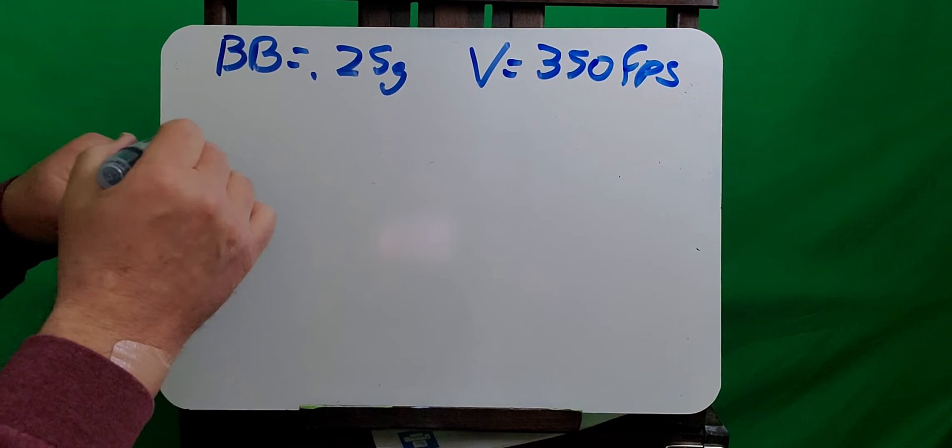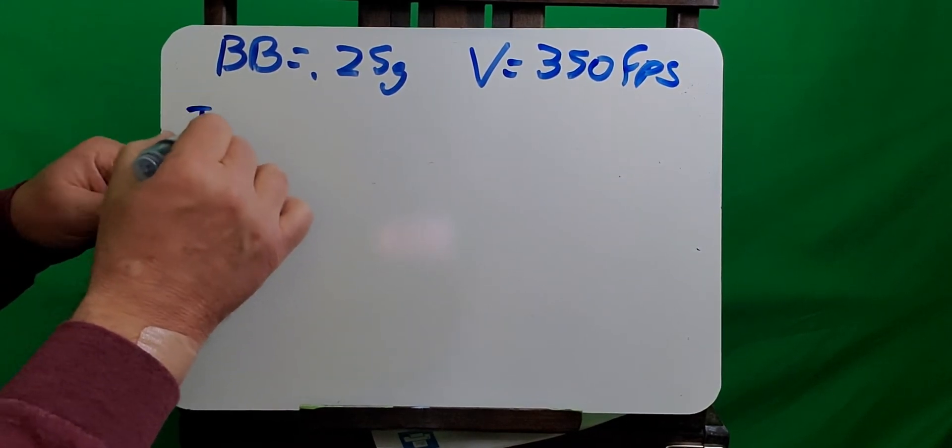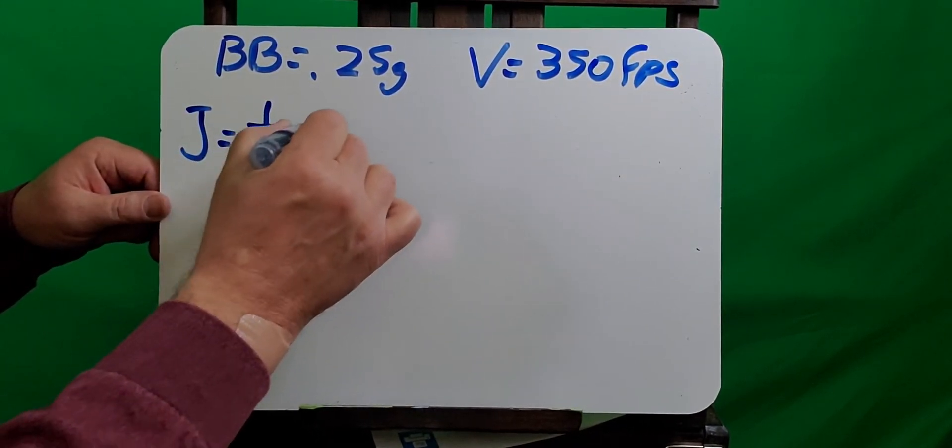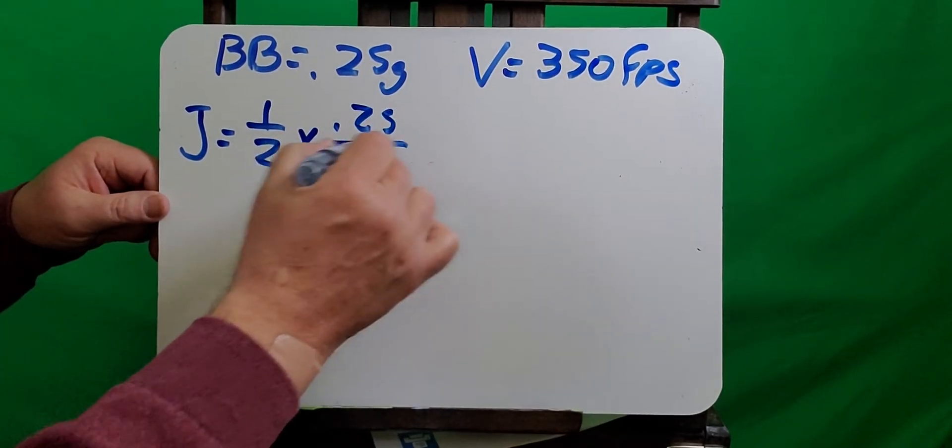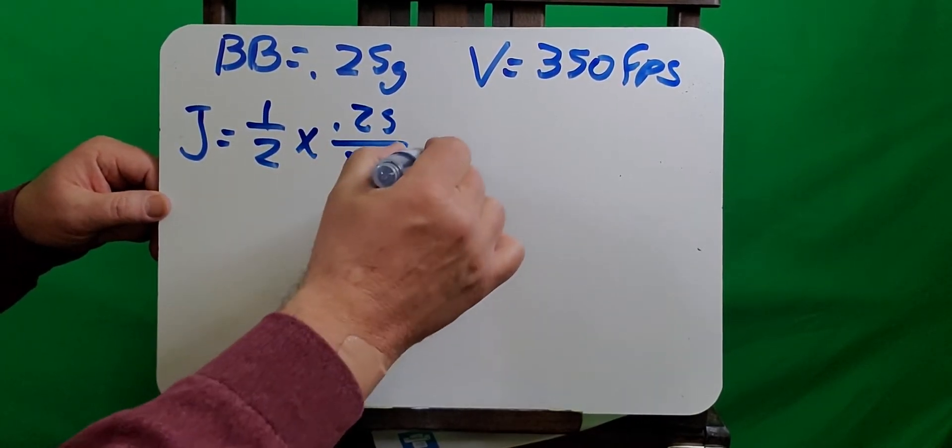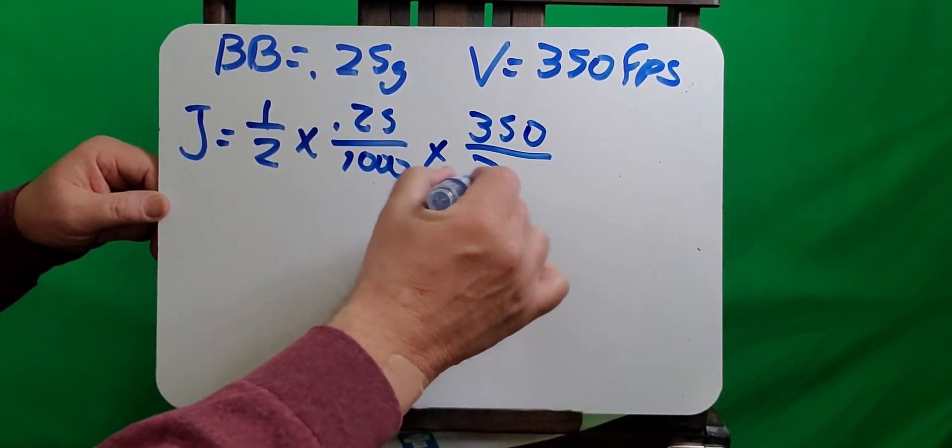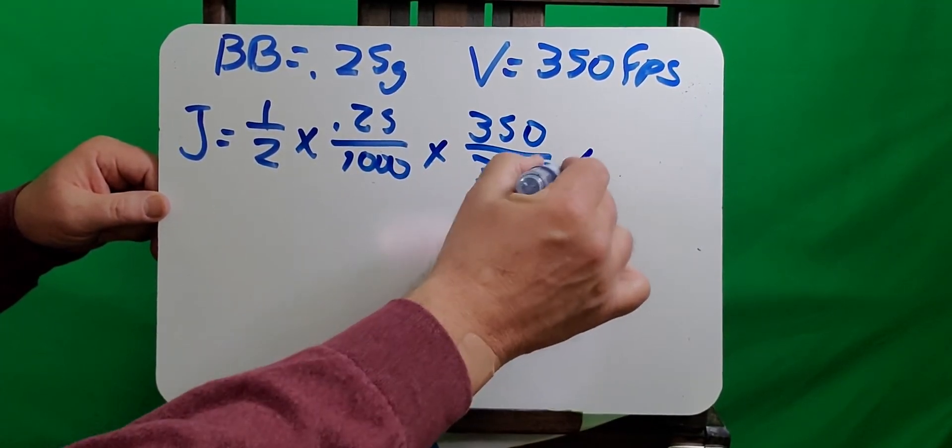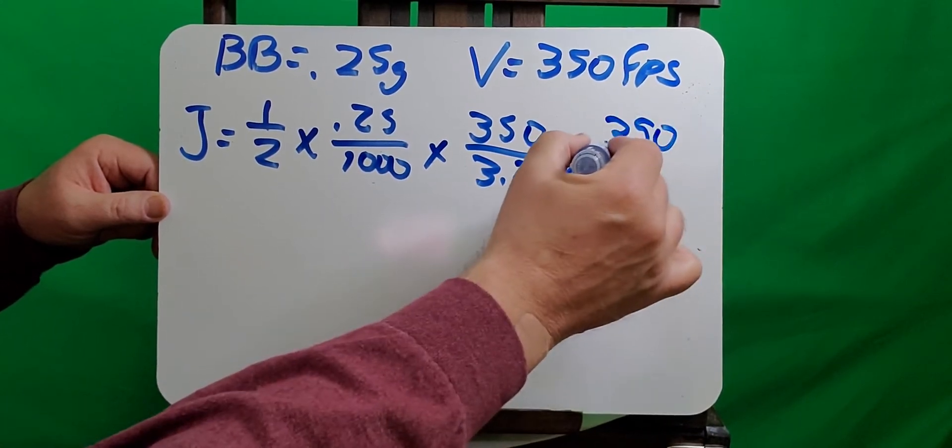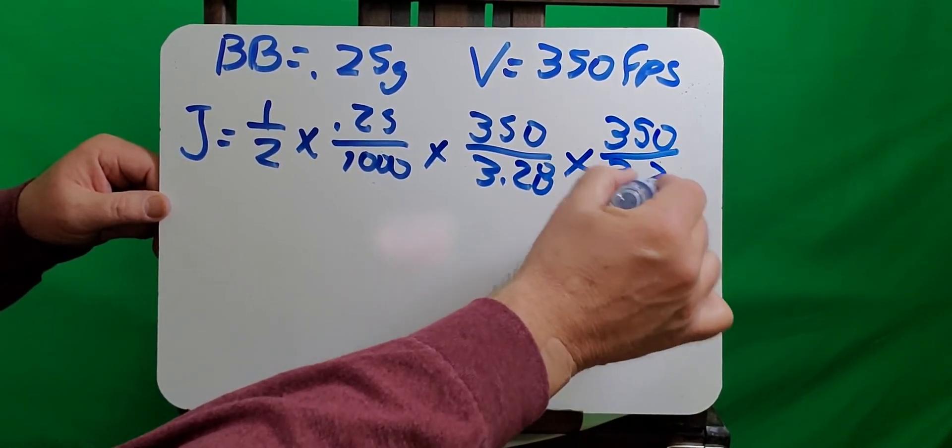So now if we toss it into our formula, joules is equal to one-half times 0.25 divided by 1,000 to turn it into kilograms times 350 feet per second divided by 3.28 to turn it into meters per second times 350 divided by 3.28 again because the velocity is squared.